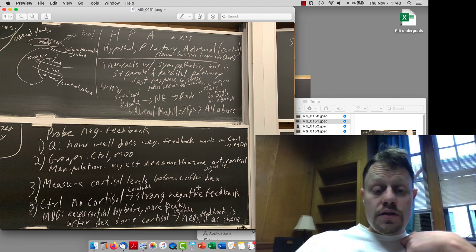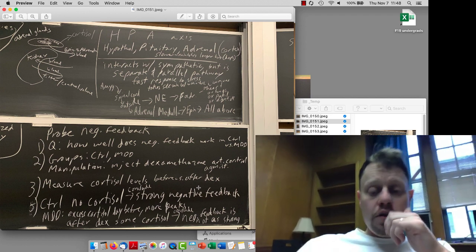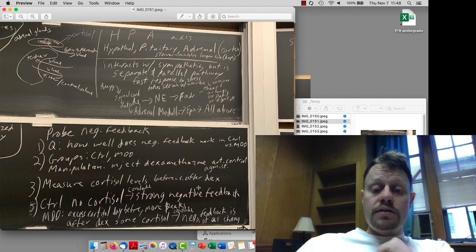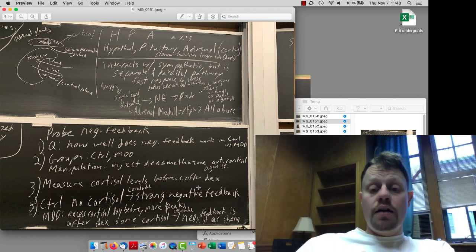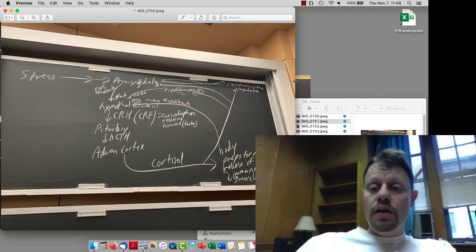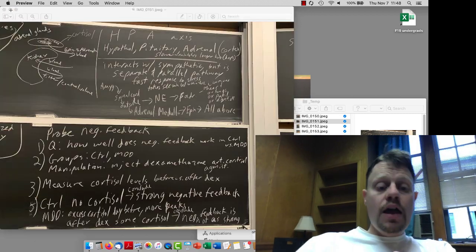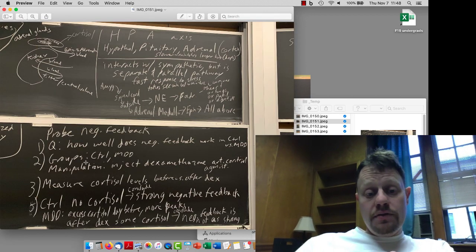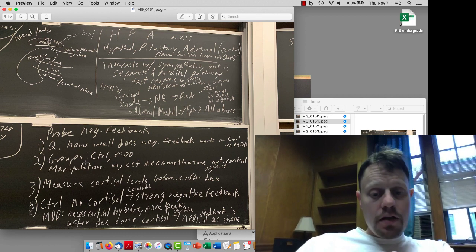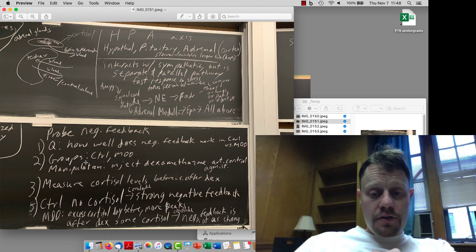In the controls, there's very strong negative feedback. So, when we have a large dose of dexamethasone, then that causes the system to completely shut down the cortisol production. That tells us that, in general, negative feedback is stronger than positive feedback in control subjects. That's true as well in major depressive disorder patients because there is some loss of cortisol, some decrease in cortisol after the dexamethasone.